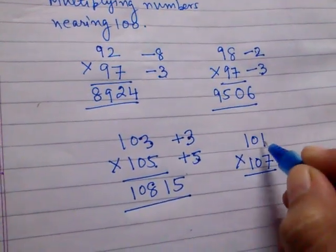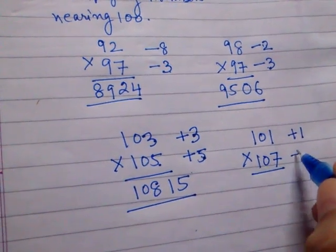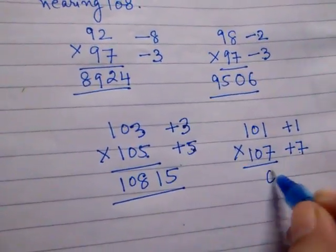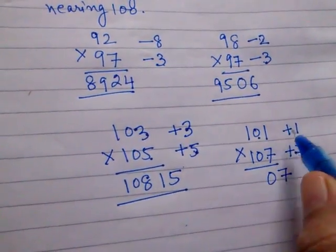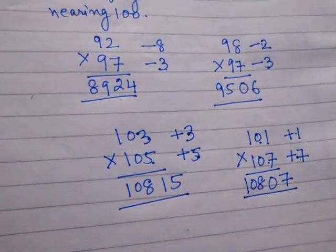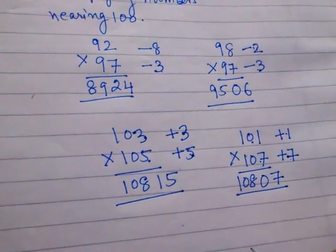Take another example: 101 multiply by 107. 101 is 1 more than 100 and 107 is 7 more than 100. So 7 into 1, I write 07, and 101 plus 7, or 107 plus 1, is 108. So the answer is 10807.